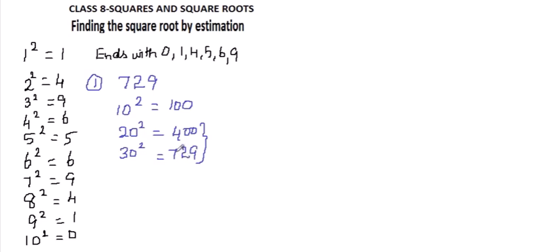Because 729 lies between 400 and 900. Now we ought to find out the exact number also. That means we have this rule: a number ends with 9 means the square of that number ends in 9, which means that number must be either 3 or must be 7. So that means it must be either 23 square or 27 square.